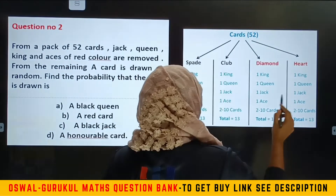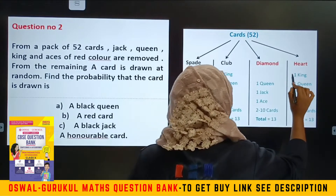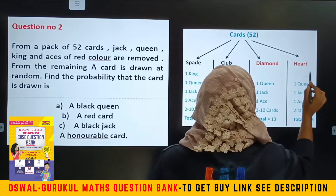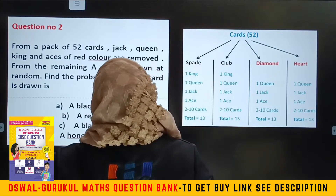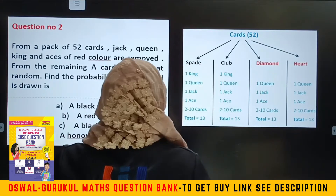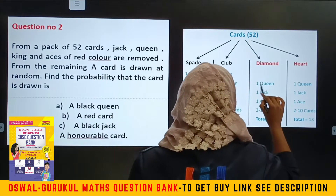So, if you have a king in red — Jack, Queen, King and Aces — those are the honorable cards that are removed.